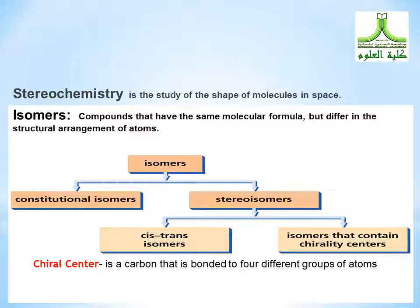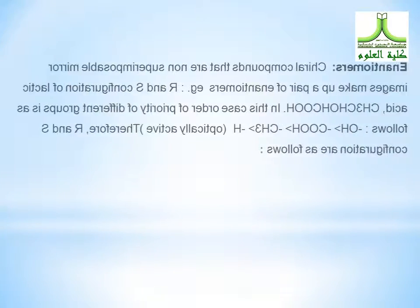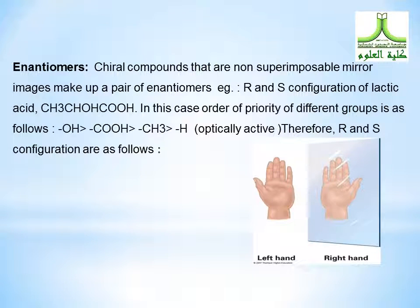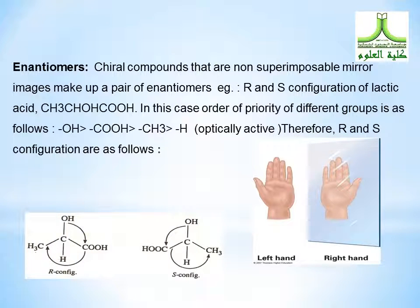A chiral center is a carbon that is bonded to four different groups of atoms. Enantiomers are chiral compounds that are non-superimposable mirror images of each other. For example, lactic acid has two enantiomers: R and S configuration. The hands are enantiomers — left hand and right hand. The two structures are enantiomers: R configuration and S configuration for lactic acid.